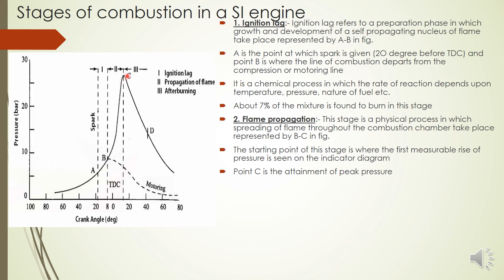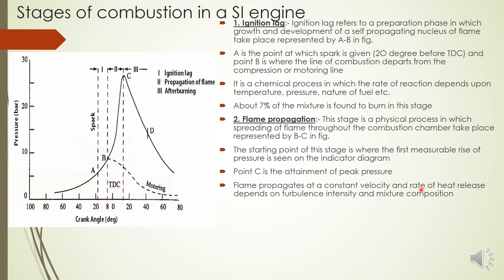Point C represents the maximum peak pressure of the cycle — around 25 bar. Flame propagates at a constant velocity and the rate of heat release depends on turbulence intensity and mixture combustion. If turbulence is greater, the flame travels with more speed.